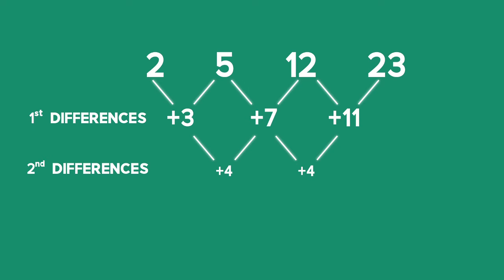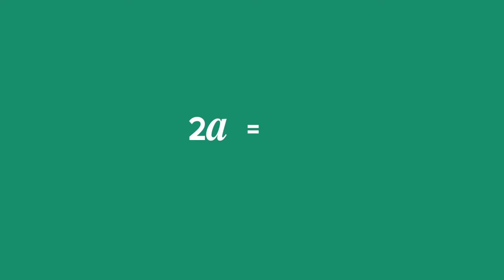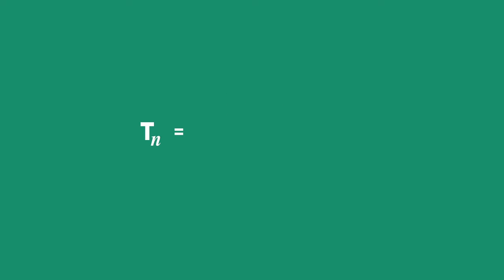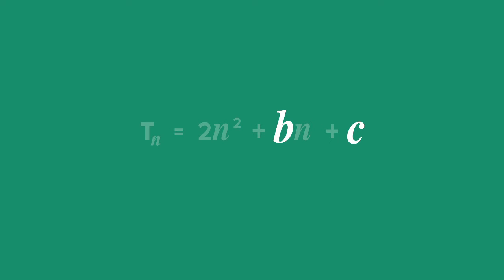We know that the constant second difference always has a value of 2a. Therefore we can work out a using the equation 2a = 4. Dividing both sides by 2, a = 2. So in the general form Tn = an² + bn + c, we know that a = 2, giving us Tn = 2n² + bn + c. We now need to find the values for b and c.